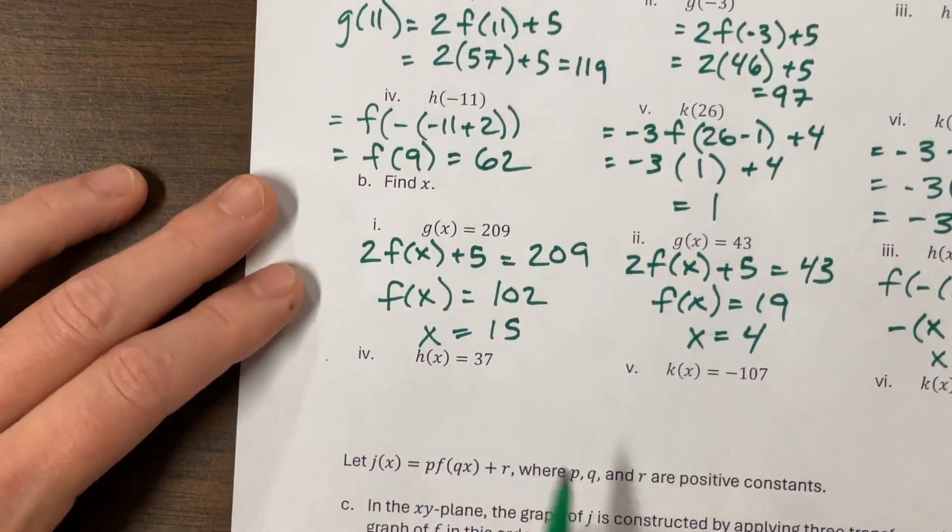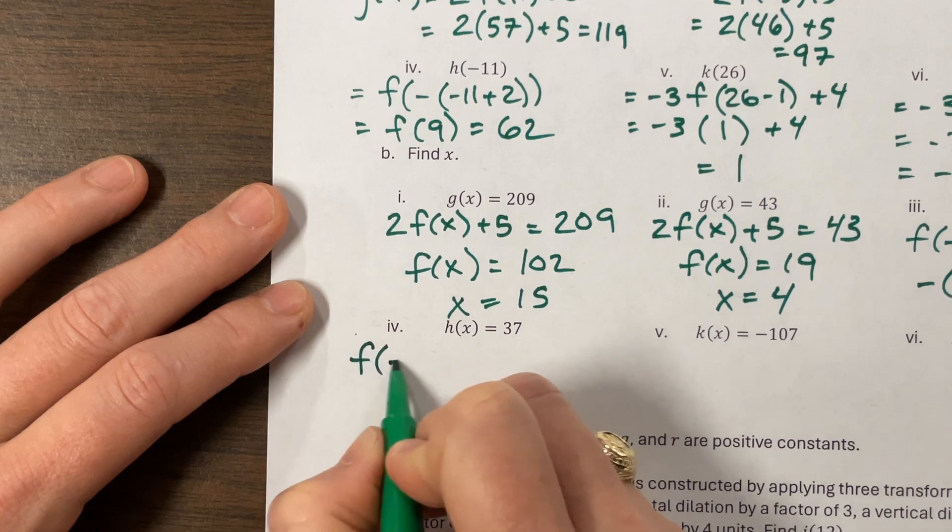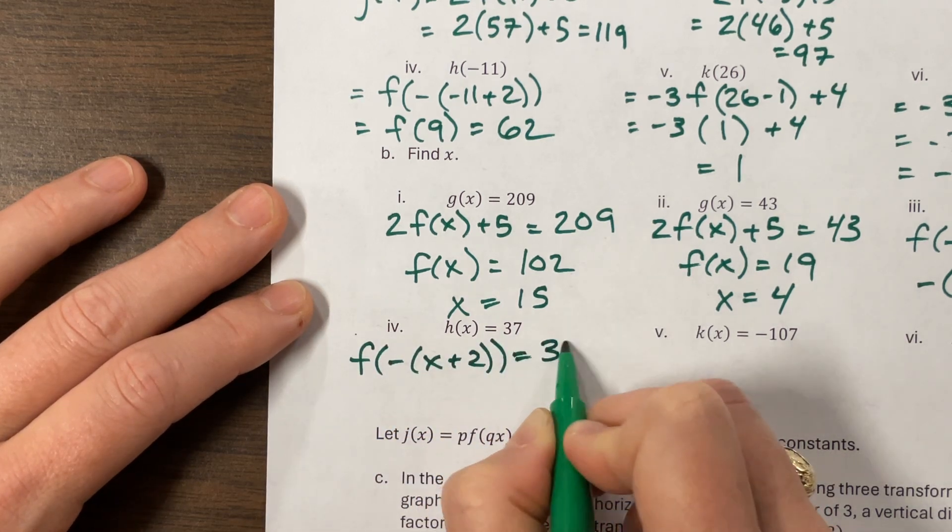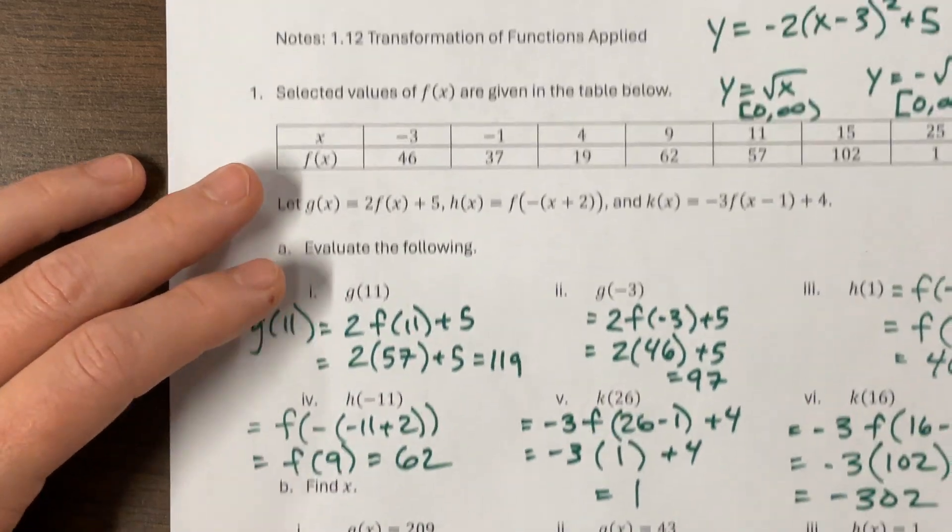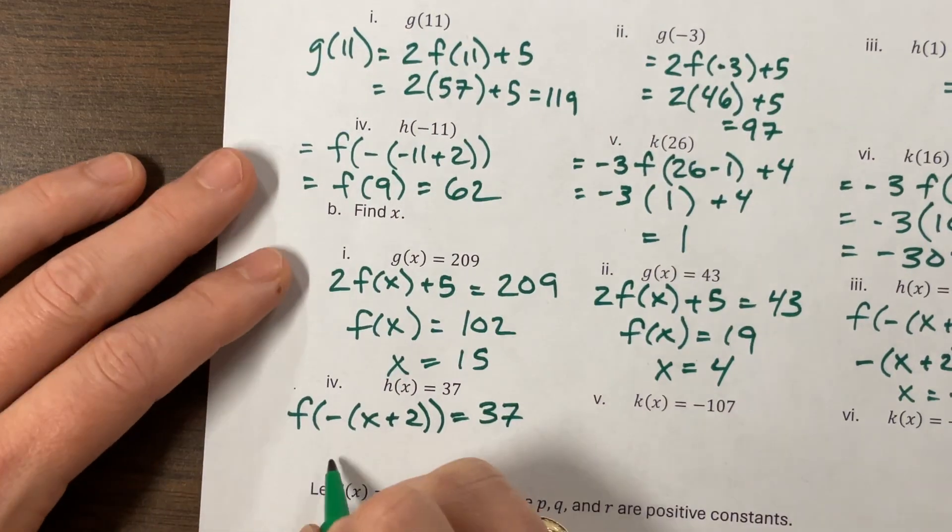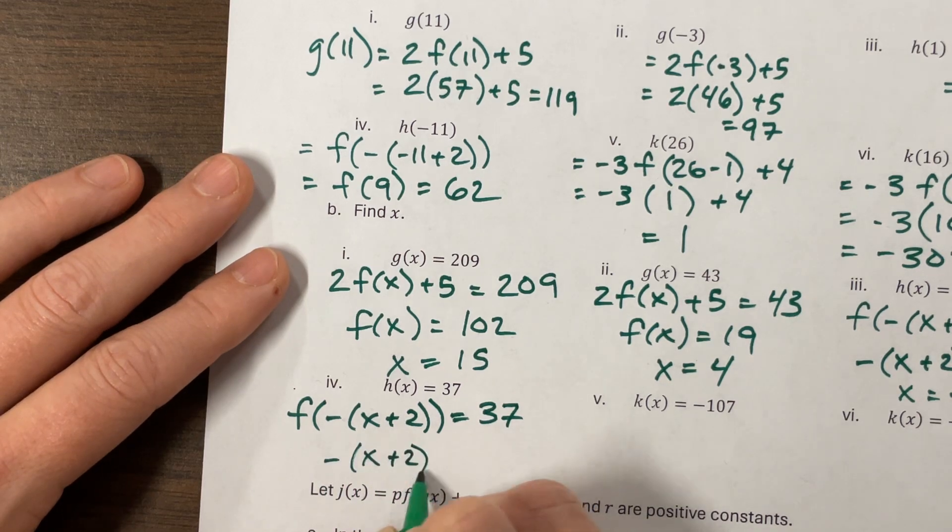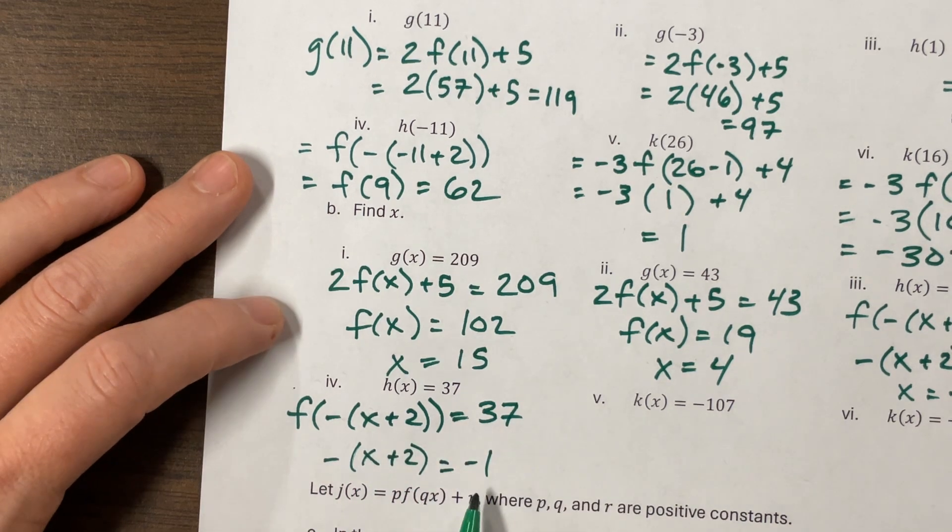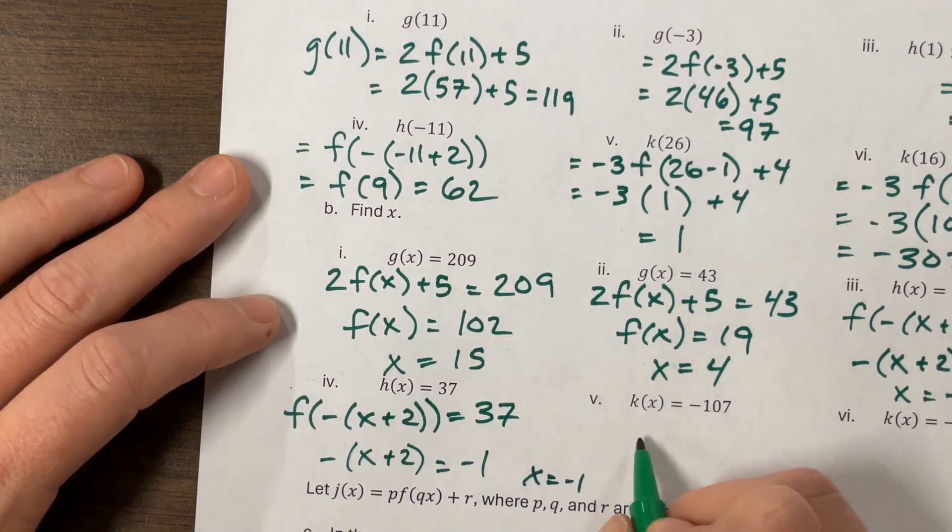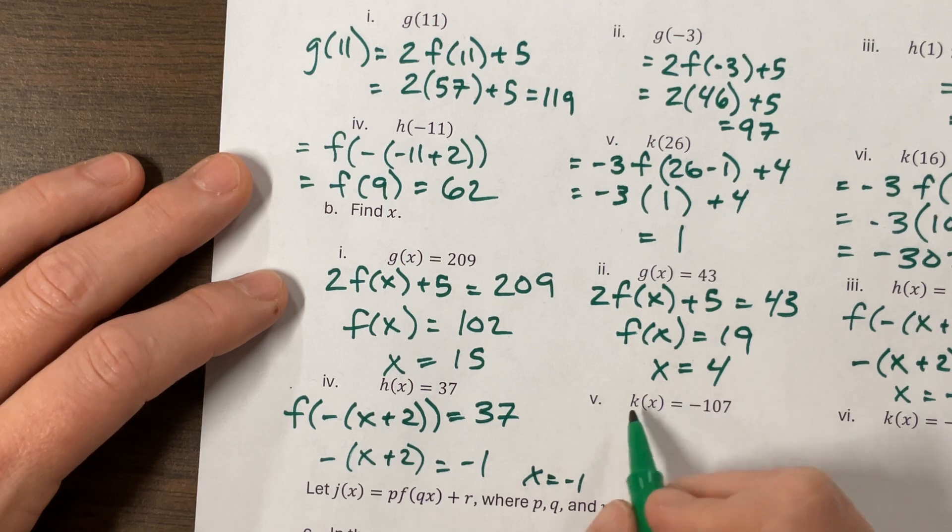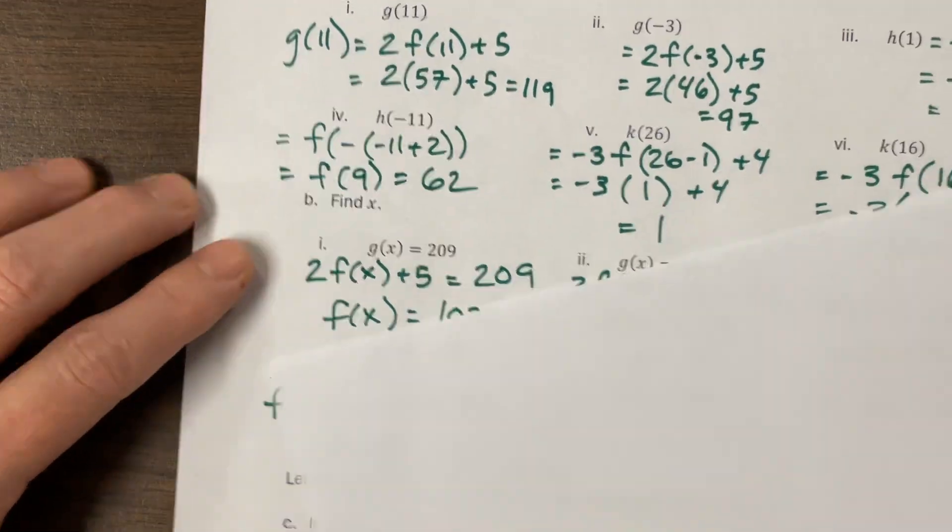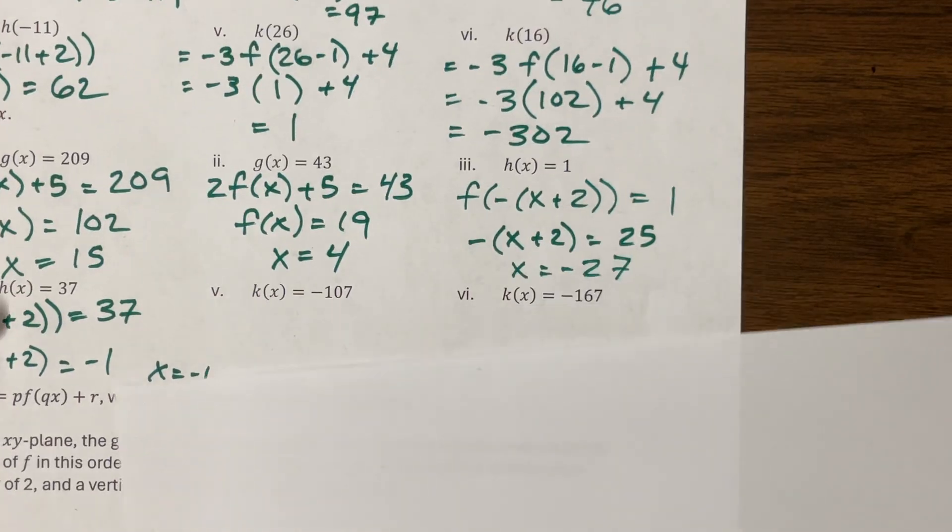Then the other, the next H is a similar format. F of negative x plus 2 equals 37. Let's go back and look at our table. Do we have a 37? We sure do. That's when x equals negative 1. So this negative x plus 2 equals negative 1 becomes a positive 1. So x equals negative 1. And then, so now our K is a different function. I might just need more space. This was getting a little ridiculous.